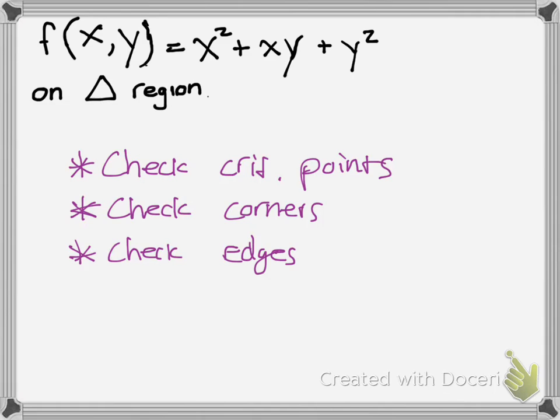If you have this function here and you're bounded by a triangular region, you'll have to find the absolute max and min at that region. First you'll have to check the critical points, then check the corners, then check the edges. That's going to be our method of approach.